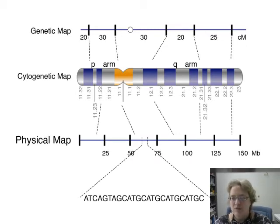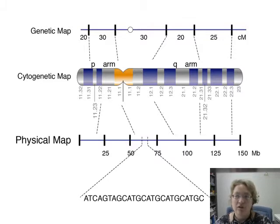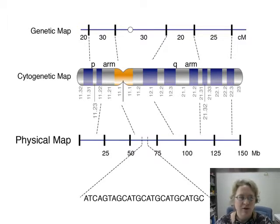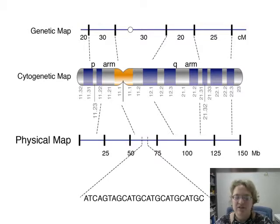We're getting to the point in genetics where you can put all of these together. That's why, like in Flybase, when you're doing your flies, you have different location information because they're talking about relatedness, chromosome location, and physical location all at the same time.